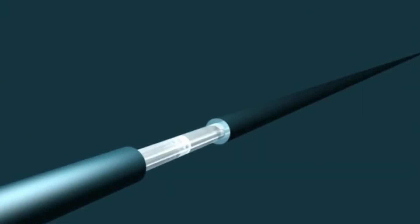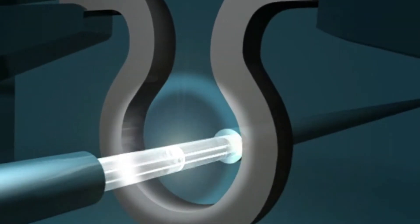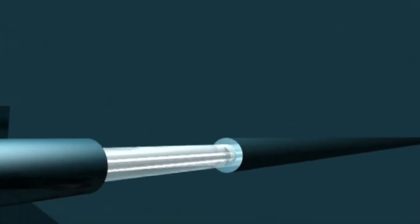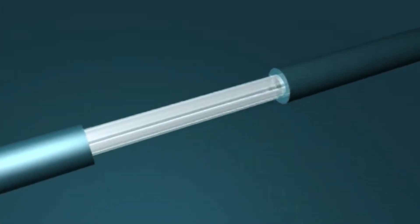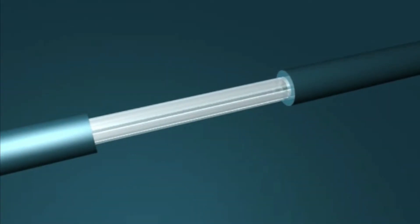Filament-based glass processors and fiber splicers use high purity argon gas to purge the splice chamber of oxygen and contaminants during the fusion process. This is necessary to keep the fibers clean and to prevent the filament from oxidizing at the high fusion temperatures.